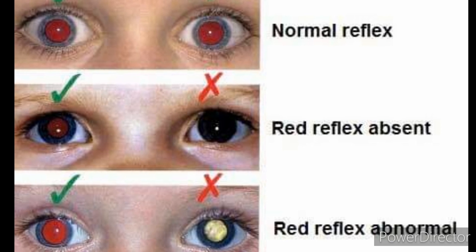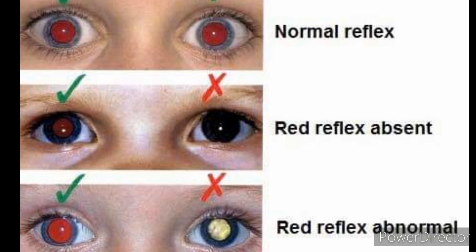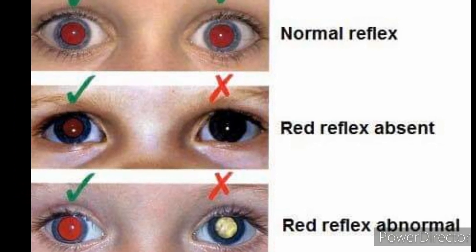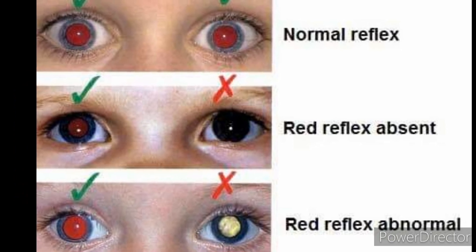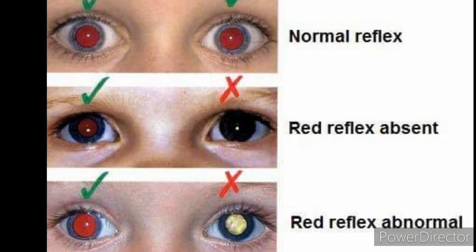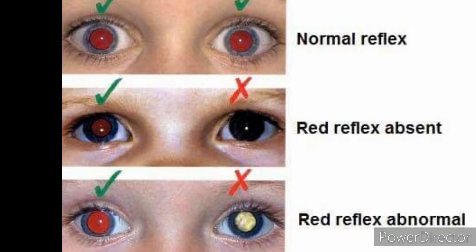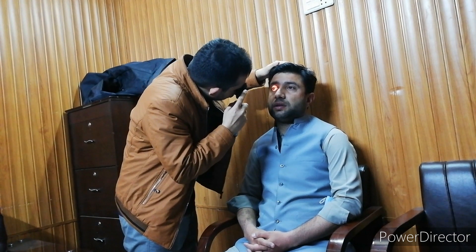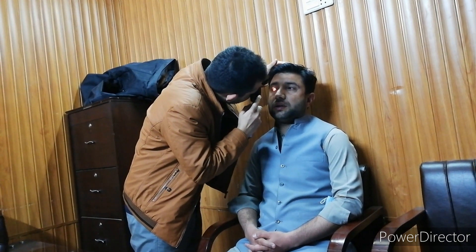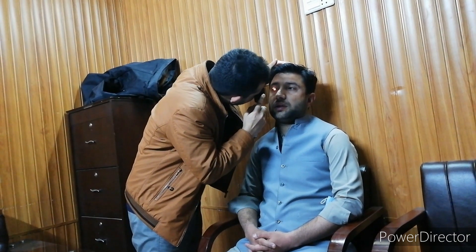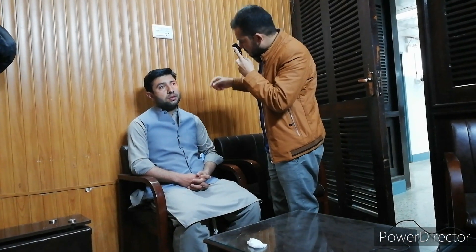First, check the red reflex of both eyes at the same time. The upper picture shows the normal red reflex and the lower one shows an abnormal red reflex. After checking the red reflex, move close to the patient and focus on the anterior chamber and then the fundus.